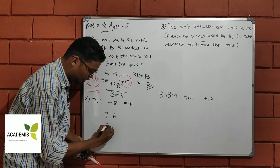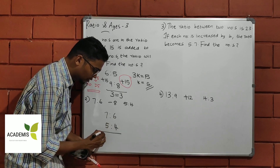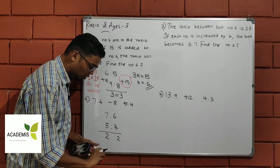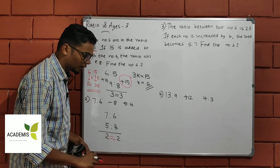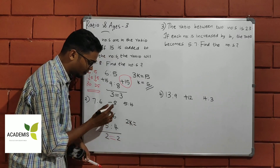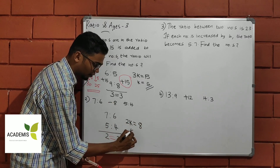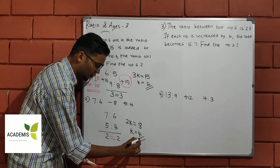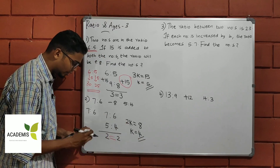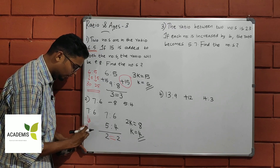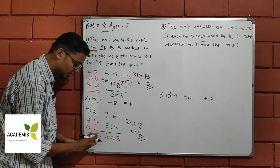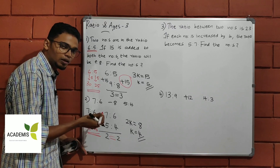So 7 is to 6, 5 is to 4 — subtracting: 7 minus 5 is 2. So 2k equals 2 into k. The ratio is 8 by 2, which gives 4. So the common factor is 4. Therefore: 7 into 4 is 28, and 6 into 4 is 24. The answer is 28 and 24.